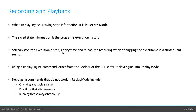When Replay Engine is saving state, it's in record mode and saves the program's execution history. You can save the execution history at any time and reload the recording in a subsequent session. Using Replay Engine from the toolbar or command line shifts it into replay mode. Certain commands don't work in replay mode, such as changing a variable's value, functions that alter memory, and running threads asynchronously.